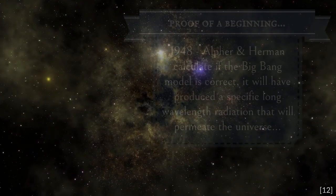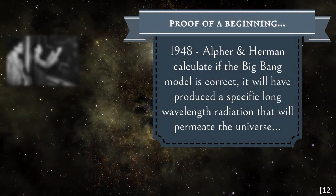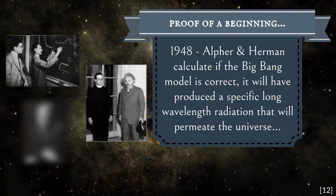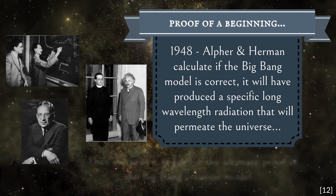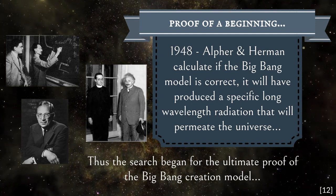1948. Alfer and Hermann calculate if the Big Bang model is correct, it will have produced a specific long wavelength radiation that will permeate the universe. Thus, the search began for the ultimate proof of the Big Bang creation model.